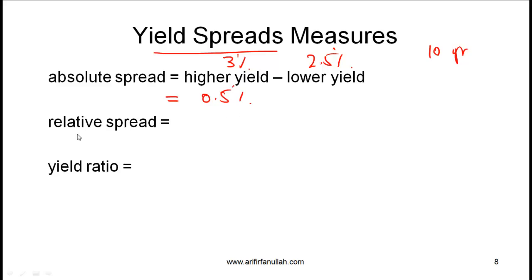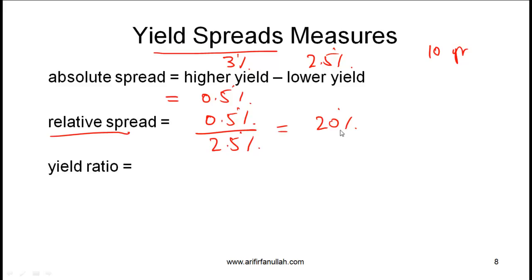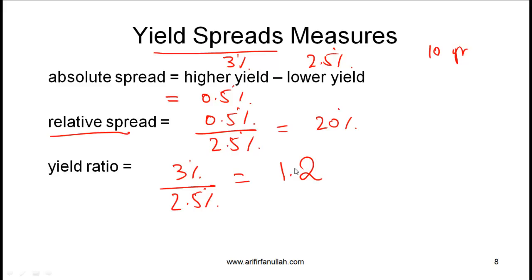A related measure is the relative spread, which equals the absolute spread divided by the treasury yield: 0.5% divided by 2.5% equals 20%. Finally, the yield ratio is simply the yield of the corporate bond divided by the yield on the benchmark treasury bond: 3% divided by 2.5% equals 1.2. These measures are straightforward — if you get this question on the exam, you should be able to nail it without a problem.